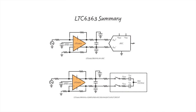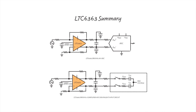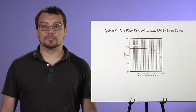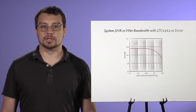In SAR ADC applications, the typical interface filter is an RC filter with a differential capacitor and two common mode capacitors. This filter serves two primary purposes: first, to band limit the noise of the amplifier and the resistors; second, to isolate the amplifier outputs from the charge kickback from the ADC, which occurs whenever the ADC switches connect the sample capacitors to the rest of the circuit. Without a carefully designed filter, this sample event can cause significant distortion.